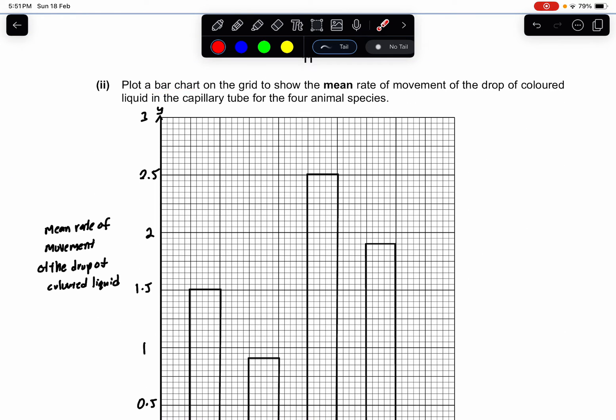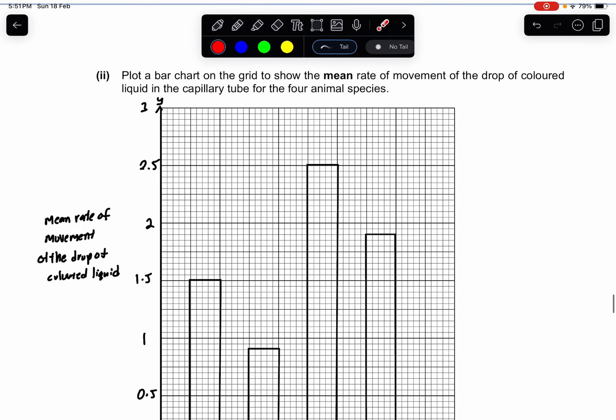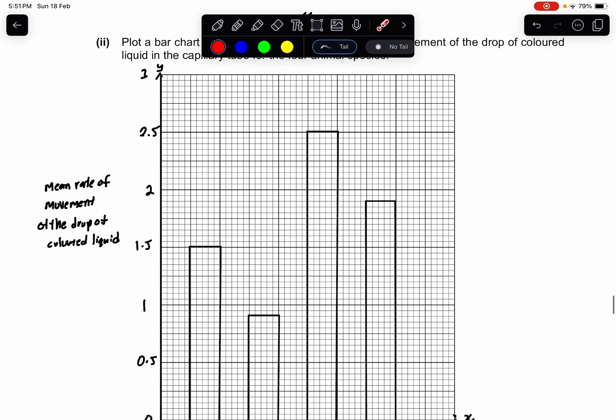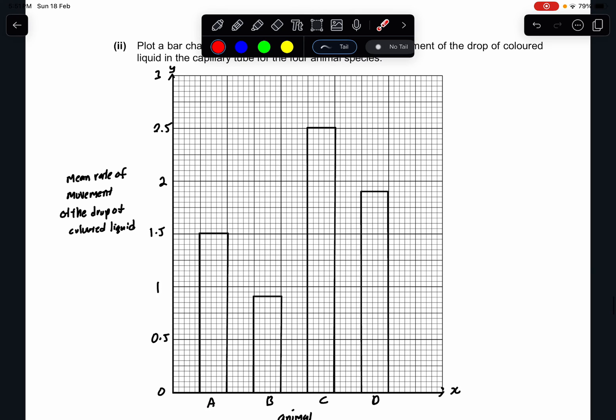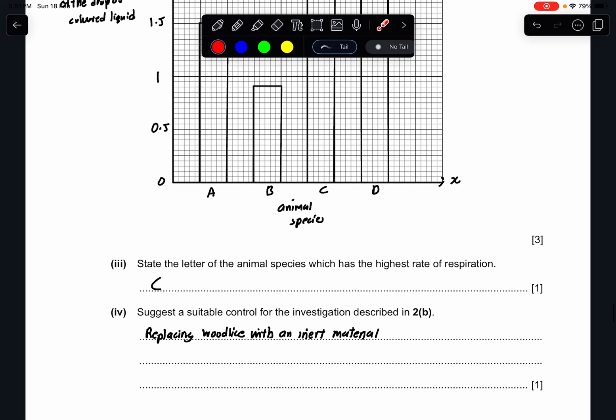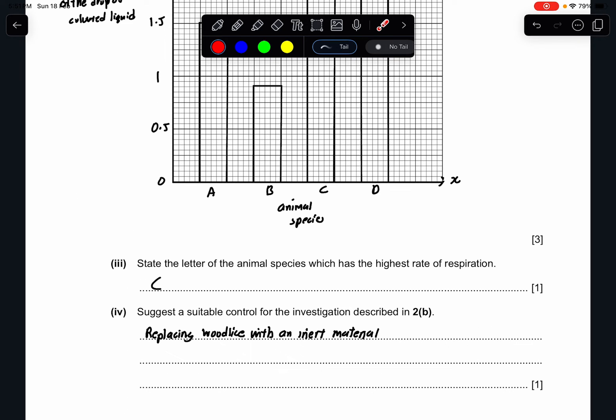Part 2: Plot a bar chart. This is a bar chart, not a line graph this time, to show the mean rate of movement of the drop of the colored liquid in the capillary tube for the 4 animal species. They have given you the y-axis and the x-axis. So this is how it will look like. A bar chart has separations in the middle. Histogram is the one that is combined together. So be careful, do not differentiate wrongly with this.